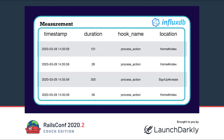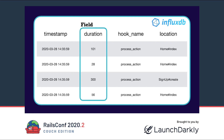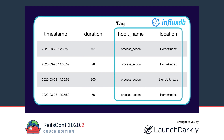If we look at the data schema in InfluxDB, we notice it is very similar to the schema in a relational database. Instead of tables, however, we have measurements. Each measurement has several metrics, and each metric has a timestamp which is the primary key. Additionally we have fields — in this case the duration — and tags — in this case the hook name and location. The main difference between a field and a tag is that tags are indexed and we can use them for filtering our metrics.